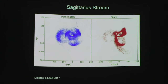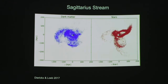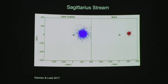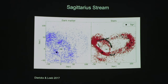You can sort of follow the core, but after a bit of time it starts becoming really difficult to follow, because both the leading tails and the trailing tails tend to mask where the core of the Sagittarius dwarf galaxy is.